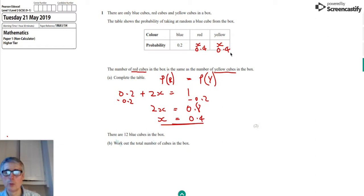So we're told that there are 12 blue cubes in the box. And we're being asked to work out the total number of cubes that are in the box.